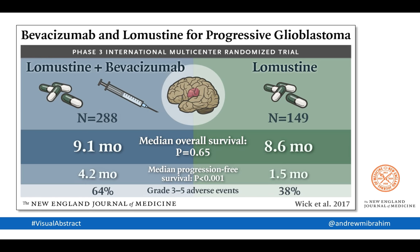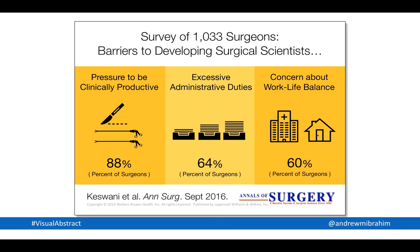Here's another randomized trial, this one done in the New England Journal of Medicine for patients with glioblastoma. One group was randomized to dual therapy, while the other received only a single therapy, and you can see the median overall survival was no different, with a p-value of 0.6.